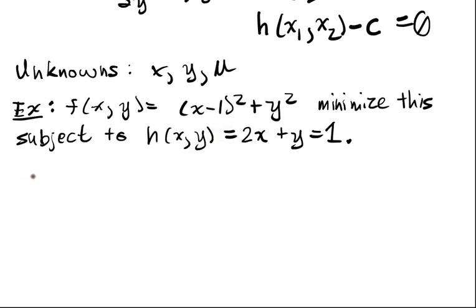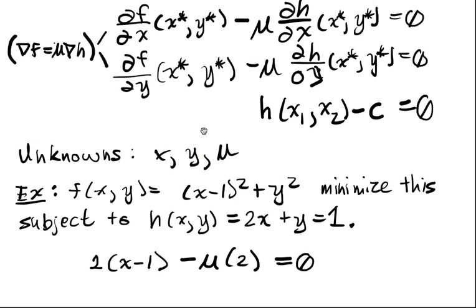So that means that, well, df/dx is going to give me 2 times (x - 1). Then I've got minus μ dh/dx, which will be 2. And that has to be equal to 0. So that was the first equation. This was me just plugging f, this f and this h into this equation.